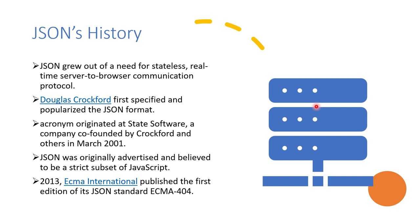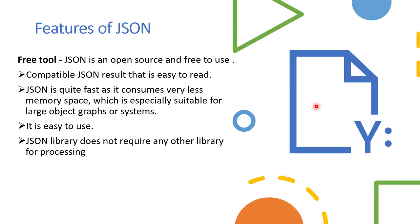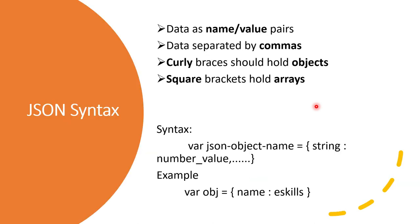In 2013 it was published in an ECMA International journal. JSON is an open source and free-to-use tool. It is compatible and easy to read, quite fast, and consumes very little memory. It is easy to use and the JSON library doesn't require any other library for processing.